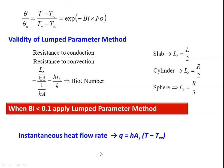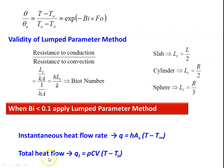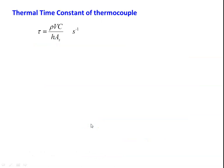The instantaneous heat flow rate Q = h·As·(T − T∞), and total heat flow QT = ρ·C·V·(T − T0). All these equations — temperature distribution, instantaneous heat flow, and total heat flow — are available in the heat and mass transfer data book. The first step: calculate the Biot number. When the Biot number is less than 0.1, we can use the lumped parameter method, since temperature is a function of time alone.